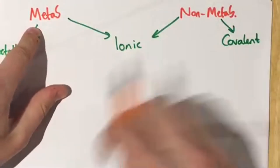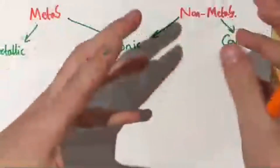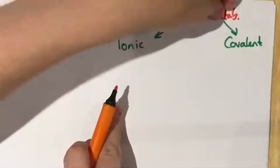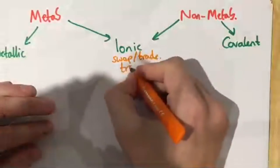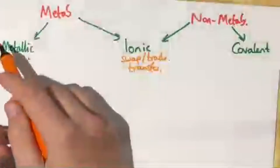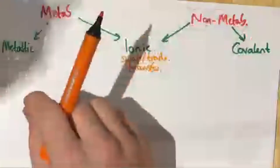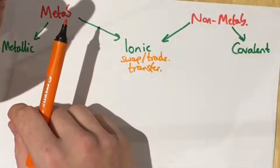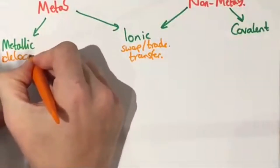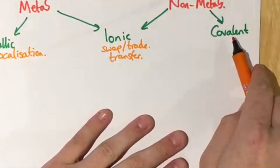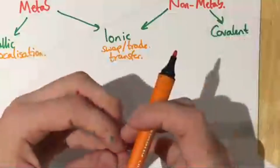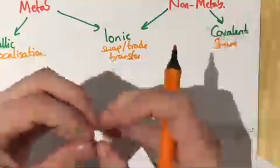In ionic bonding there's a transfer of electrons. Metals have slightly too many electrons; non-metals don't have enough. The metal gives its electrons to the non-metal. In metallic bonding, the electrons delocalise — they exist around the metals and don't stay in one place. In covalent bonding, the electrons are shared — non-metals come together and share electrons.